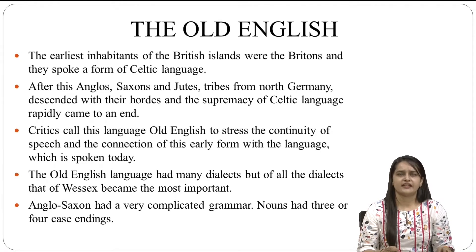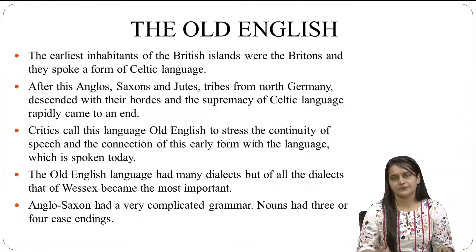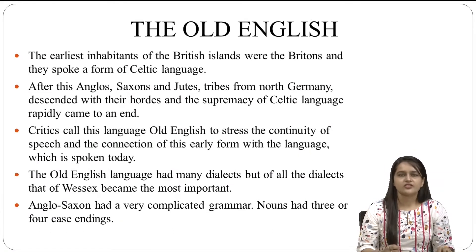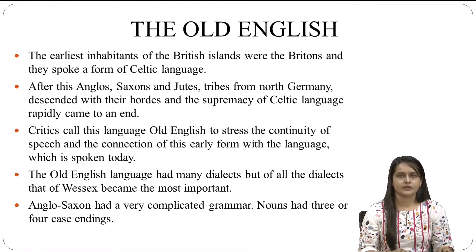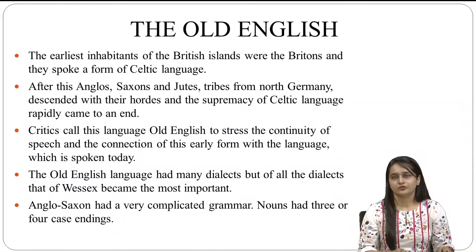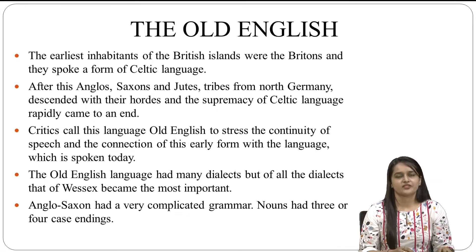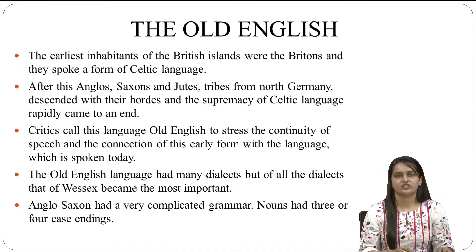Anglo-Saxon had a very complicated grammar. Nouns had three or four case endings. It was also highly inflected, just as modern German is today. The vocabulary of Old English was chiefly Germanic, though some words came from the language of the Celts. Every word was pronounced according to its spelling and there were no silent syllables. The Roman occupation too had its impact on the Anglo-Saxon tongue.